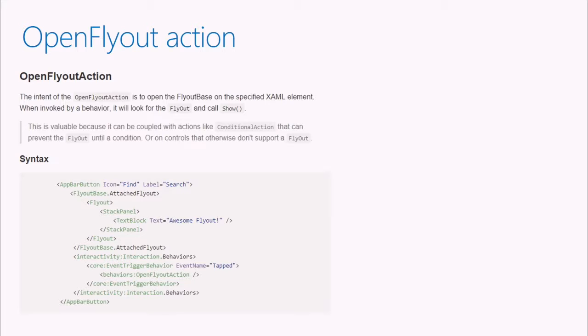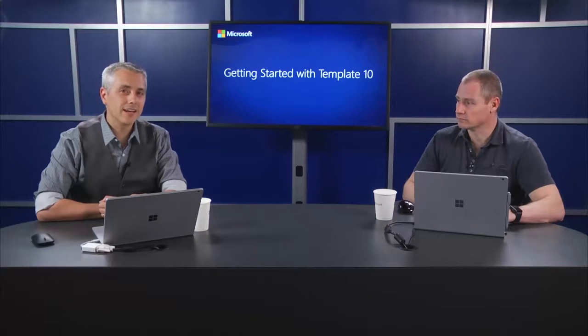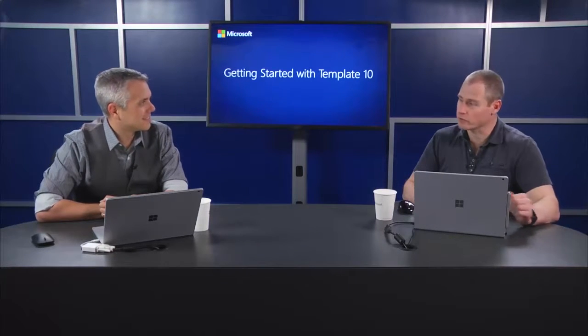That's the open fly-out. Sometimes there's no native way to invoke the fly-out and show it — now there is. Typically you'd just create something in your code-behind that would use the fly-out base to actually find the attached fly-out on the control. This just does it all for you. So step one is to show the fly-out. Wouldn't it be great if there was some sort of action to then hide that fly-out? It almost seems like we should have called it hide instead of close, but there you go.